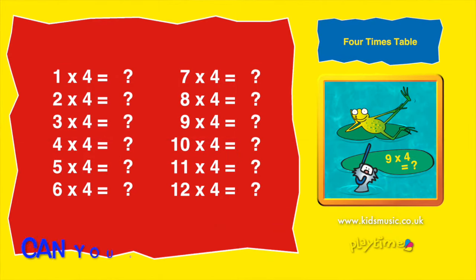One times four is four. Two times four is eight. Three times four is twelve. Four times four is sixteen.